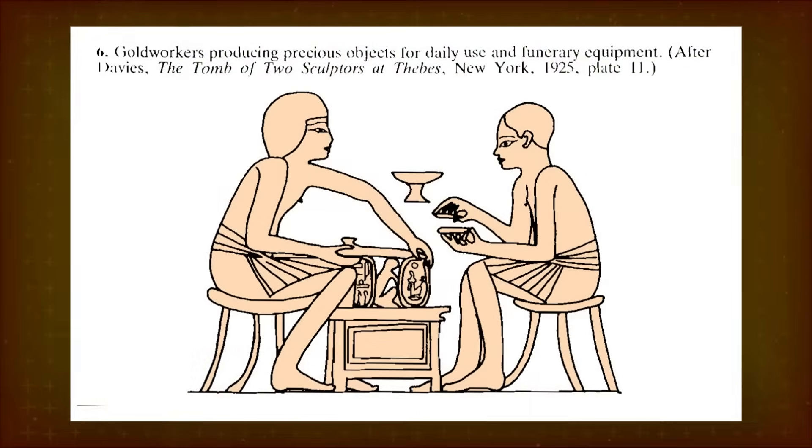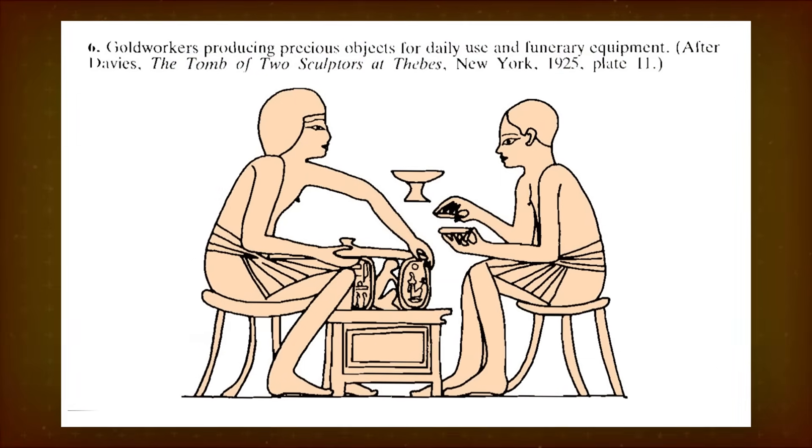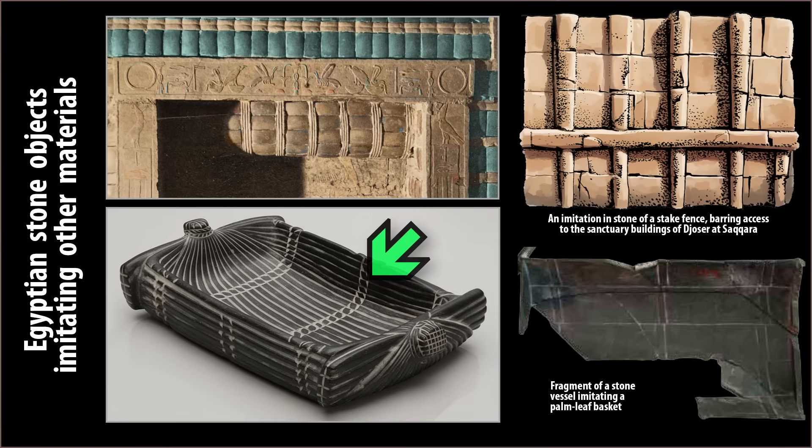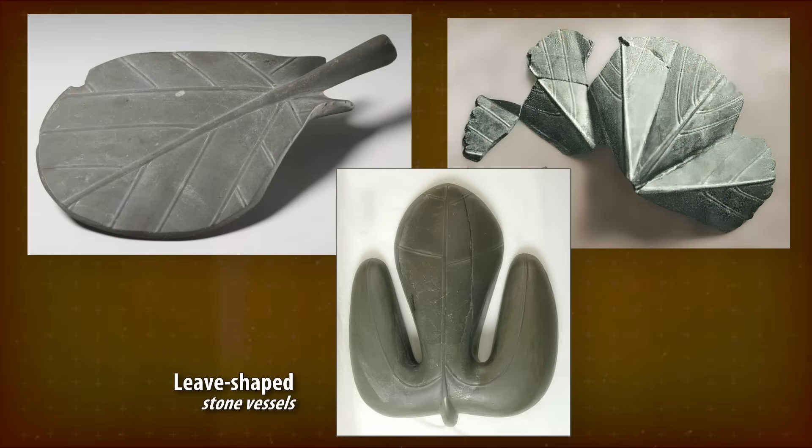Metal wasn't the only material imitated in stone. Egyptian stoneworkers also replicated rolled-up reed mats, wickerwork, wood fences, baskets made of palm leaves, and even individual tree leaves.